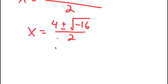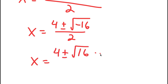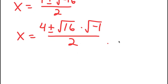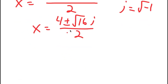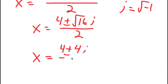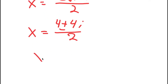The square root of −16 is the same as the square root of 16 times the square root of −1. The imaginary number i is equal to the square root of −1, so I now have x = (4 ± √16 · i) / 2. The square root of 16 is 4, so I get x = (4 ± 4i) / 2, which equals 2 ± 2i.